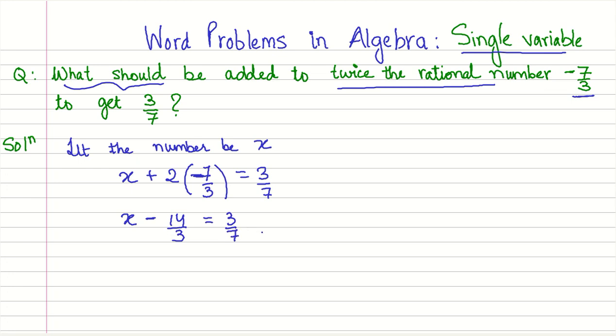So if we solve for x, we will get what we need to add to twice of 7 by 3 to get 3 by 7. So x minus 14 by 3 equals 3 by 7. Now let us solve this problem.